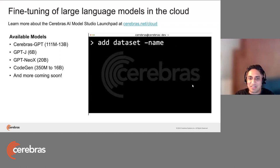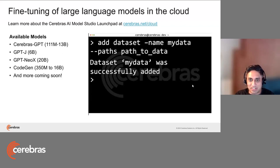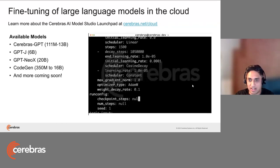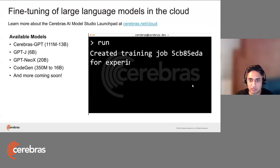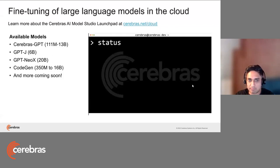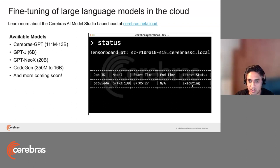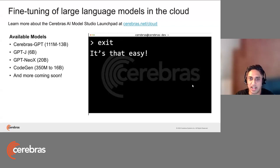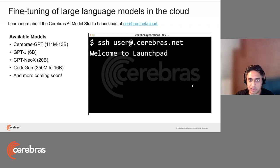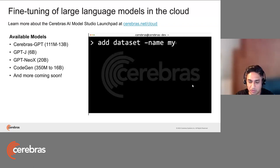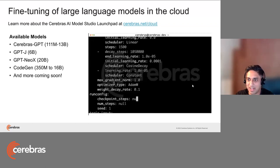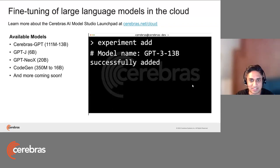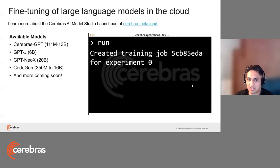As a friendly reminder, we have an exciting product we recently launched called the Cerebras AI Model Studio Launchpad. This is an extension of our AI Model Studio that allows users to submit, configure, run, monitor the status of a training job, and then export your trained weights all from our new CLI. All the models are still available with the Model Studio Launchpad, and it's just as easy as running about five commands now. Feel free to reach out and we'd be happy to share more details.